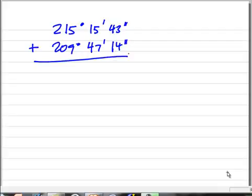When I'm done with this result I need to have an angle that is less than a full circle. A full circle is 360 degrees.